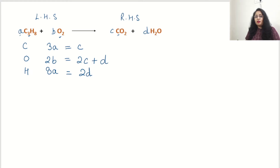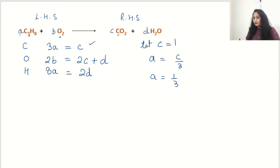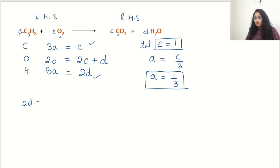We will assume one variable. Let C equal 1. Then from equation 1 (3A = C), A will be C divided by 3, which gives A = 1/3. From the third equation (2D = 8A), D = 4A, so substituting A = 1/3 gives D = 4/3.